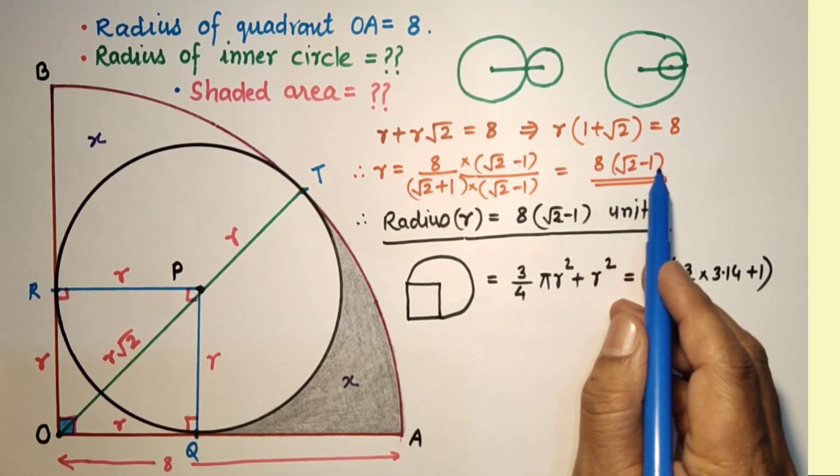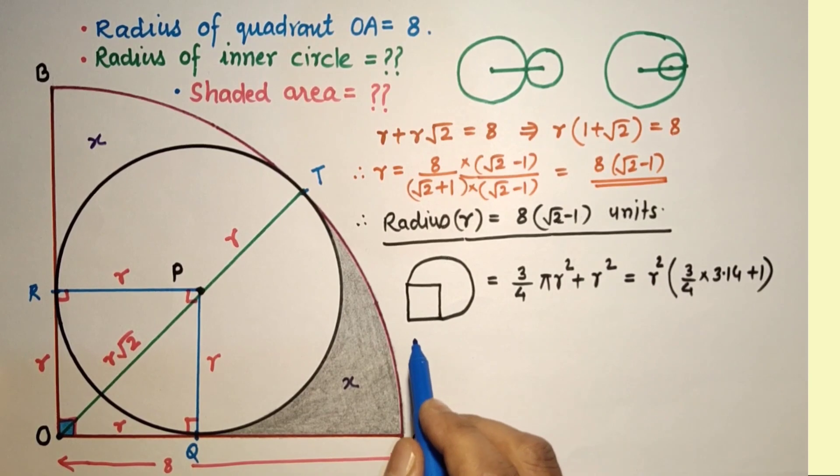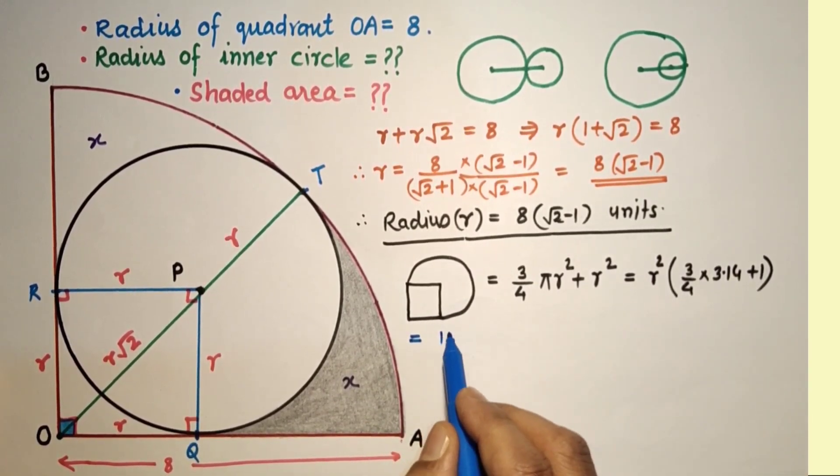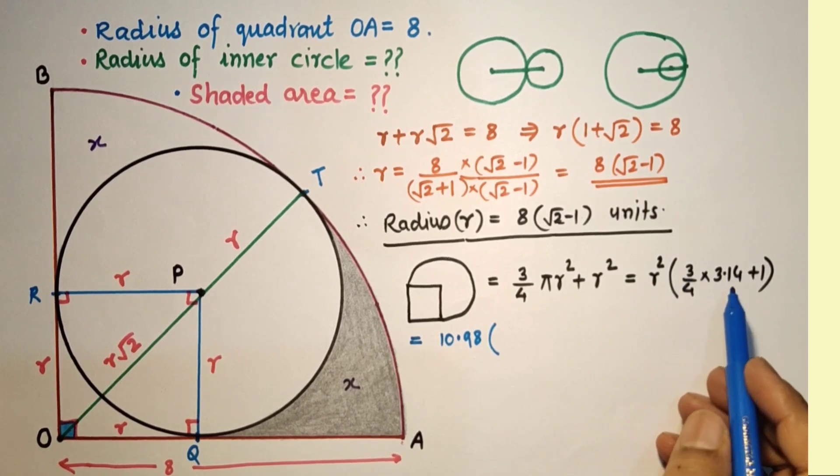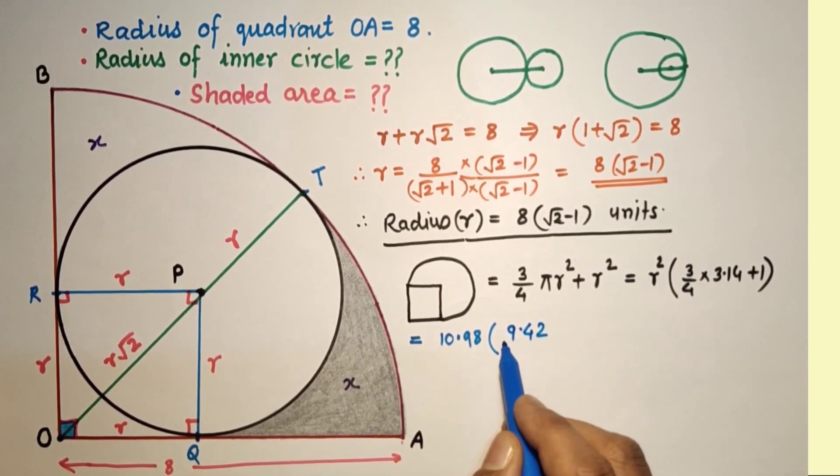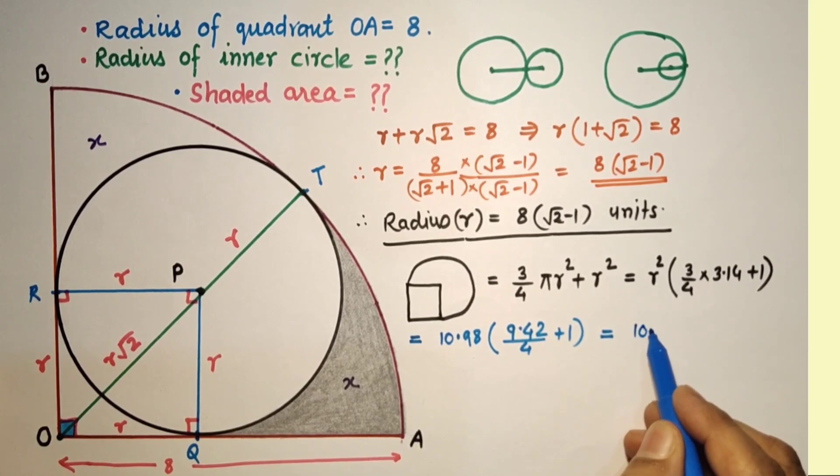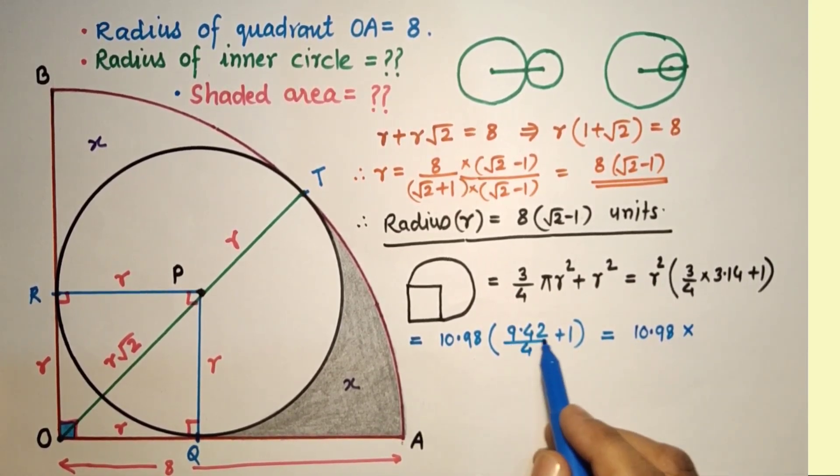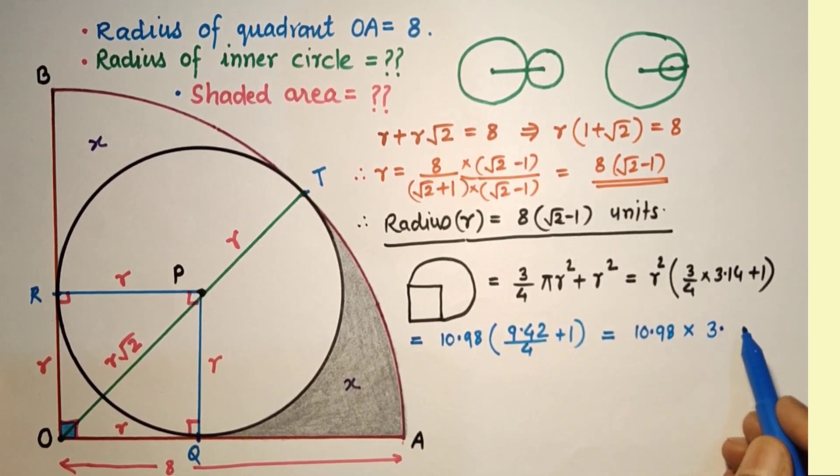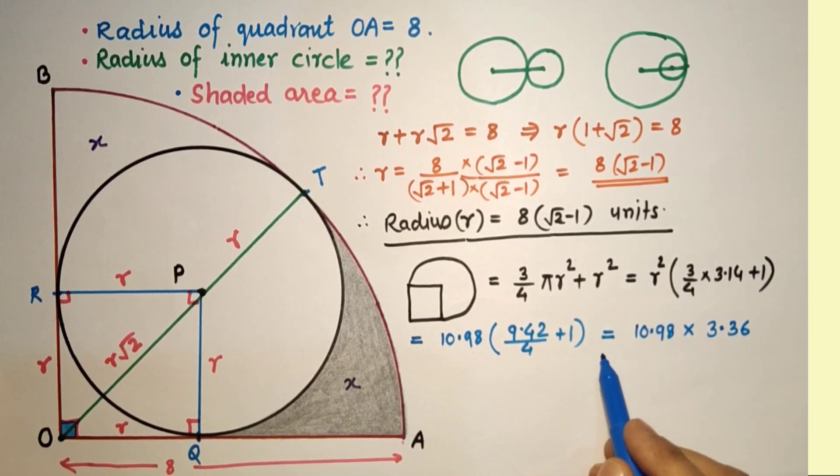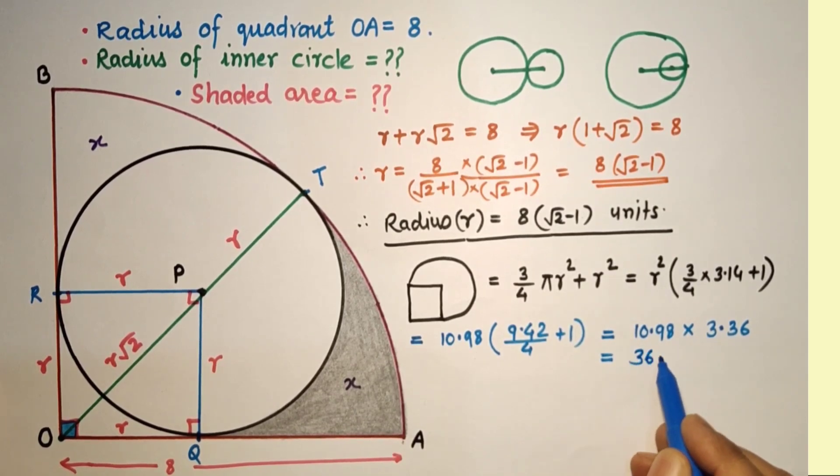R is 8(√2 - 1). If we square it, we will get approximately 10.98. So 3 × 3.14 = 9.42 by 4 plus 1. That equals 10.98 × (9.42/4 is approximately 2.36 plus 1, so 3.36). That equals approximately 36.89 square units.